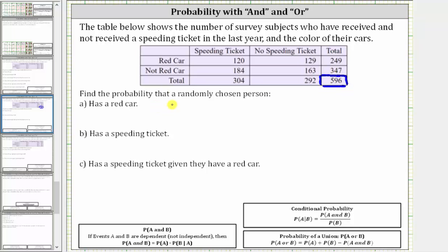We're asked to find the probability that a randomly chosen person, A, has a red car.